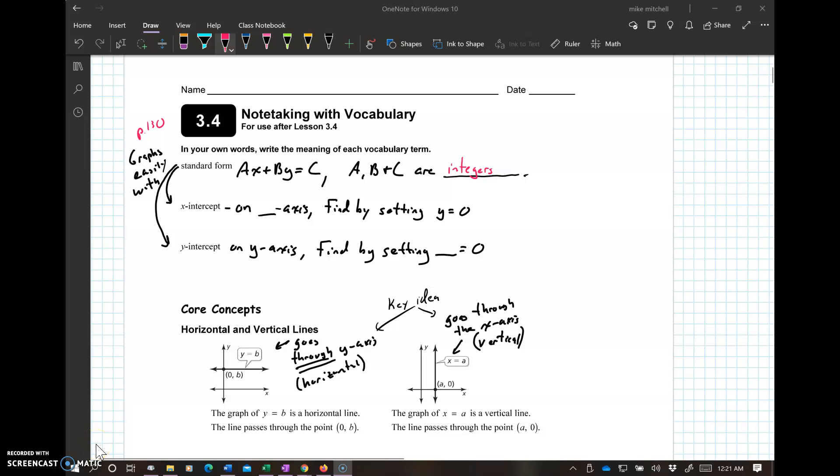This form, I should say. The x-intercept, if you remember our song from the other day, is on the x-axis. You find it by setting y equal to 0. The y-intercept is on the y-axis. You find it by setting x equal to 0. So notice, for the x-intercept, it's the y. For the y-intercept, it's the x equals 0. So it's the opposite letter you're making equal to 0. This is on page 130 in your book.